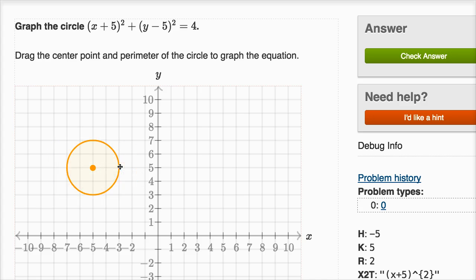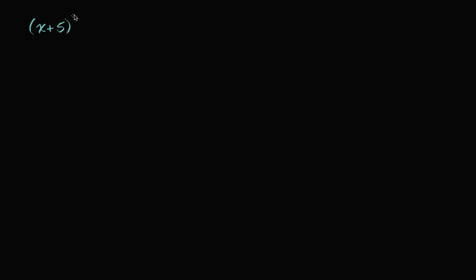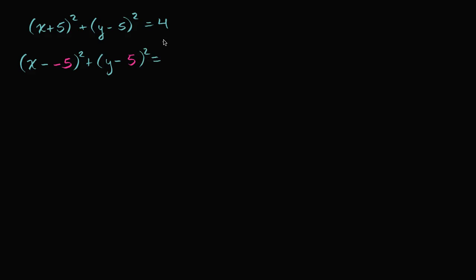The way it's drawn right now, the radius is indeed equal to two, so we are done. Let me get my scratch pad out to hit this point home. That equation was x plus five squared plus y minus five squared equals four. I want to rewrite this as x minus negative five, squared, plus y minus positive five, squared, equals two squared. This tells us the center of the circle is x equals negative five, y equals five, and the radius equals two.